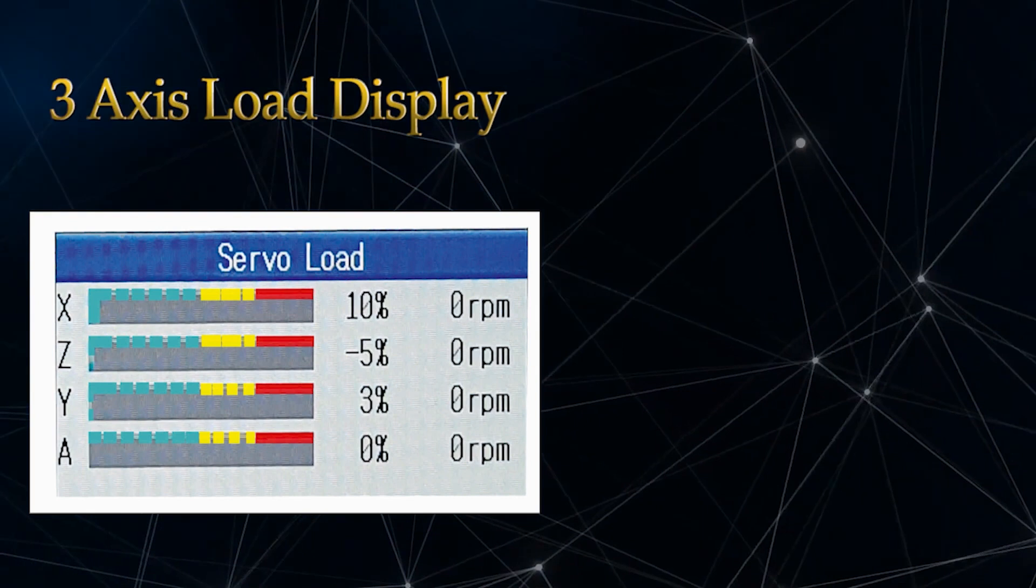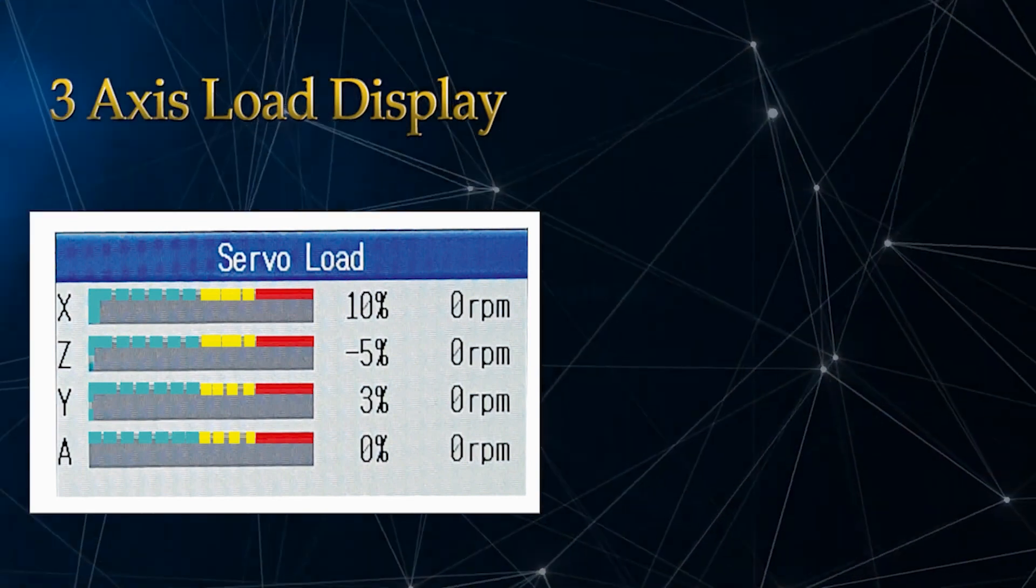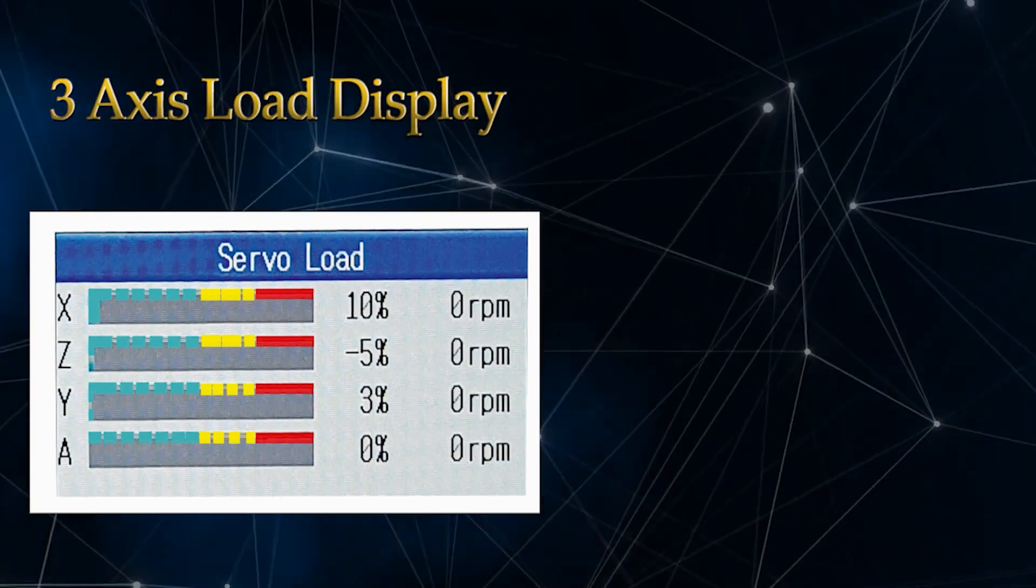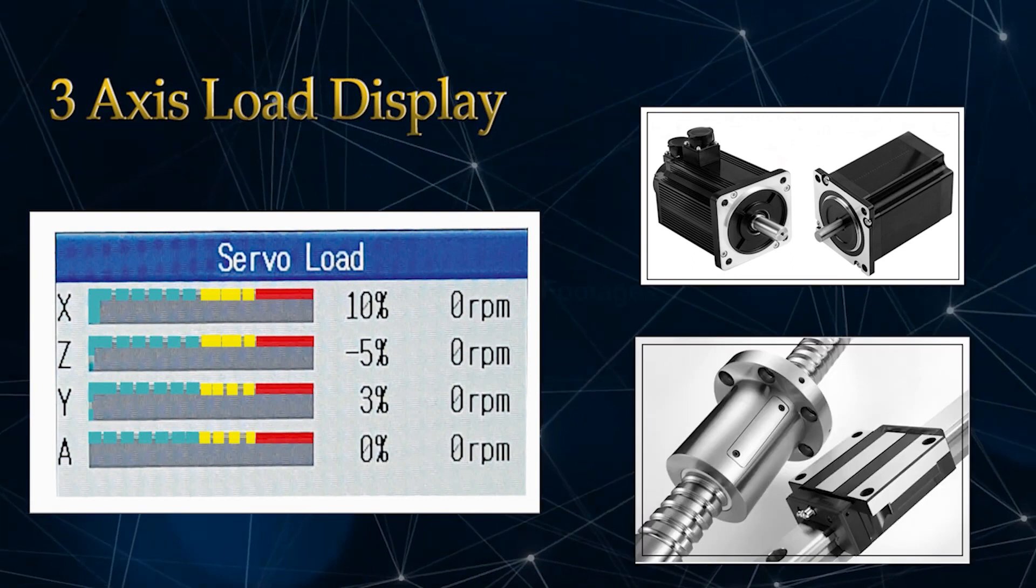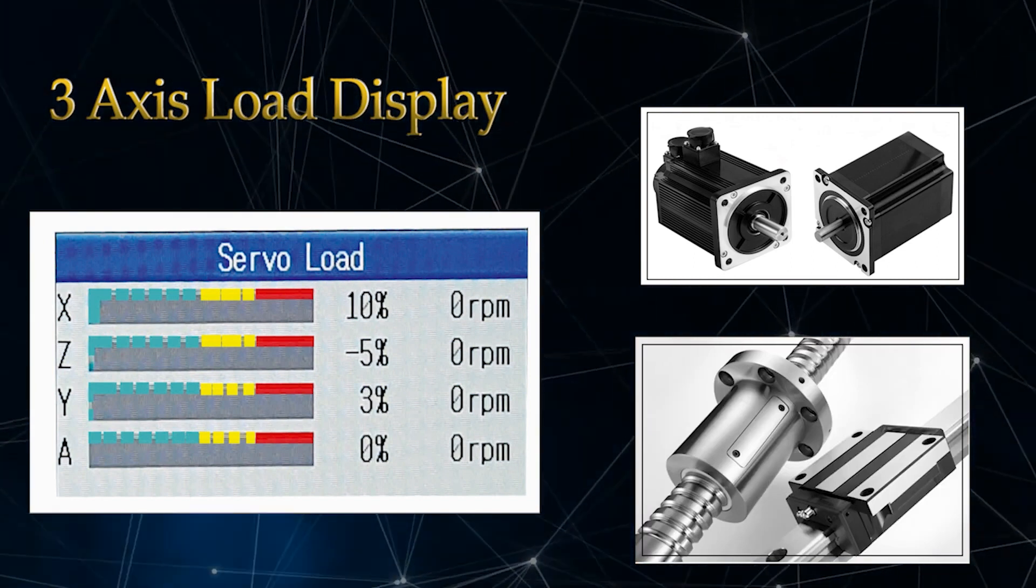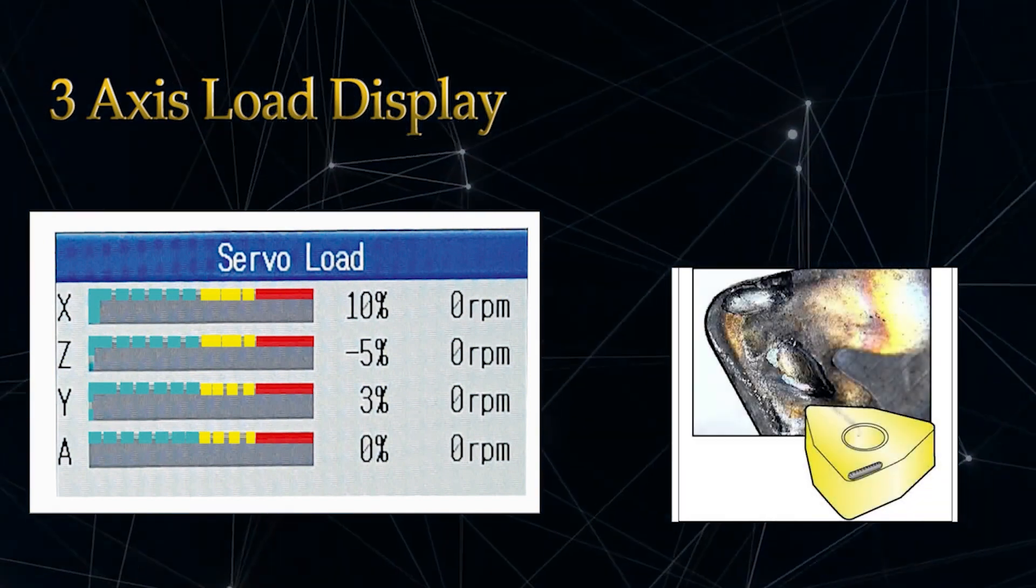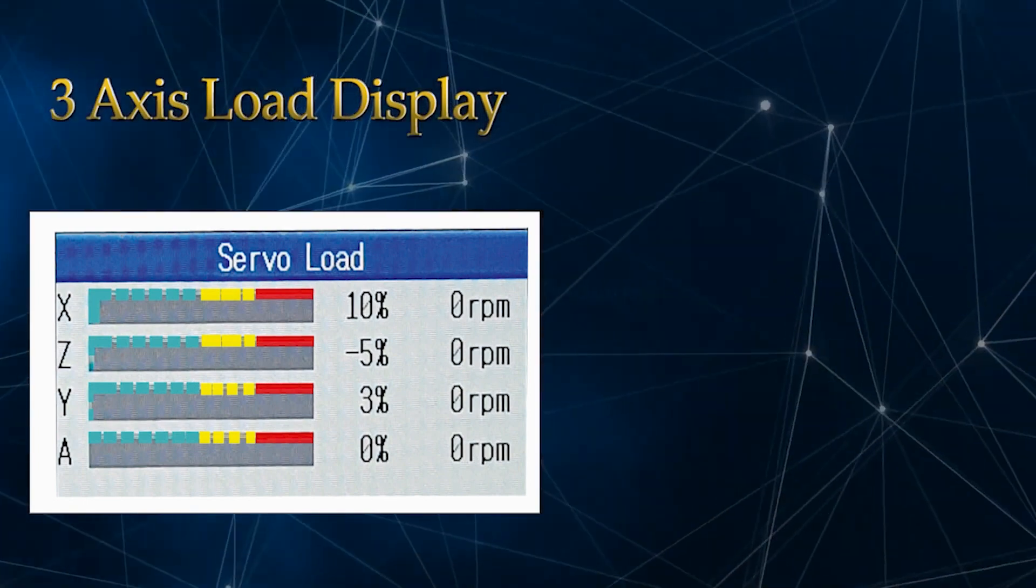Three-axis load display lets the machine notify us before maintenance. The machine alerts us before servo motor drive and ball screw become weak. If a large cut occurs in the job, the machine will notify us of insert wear, reducing the possibility of accidents.